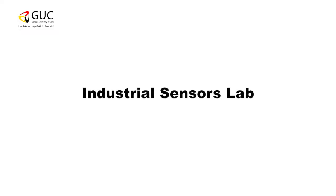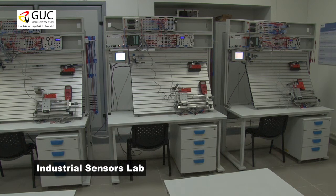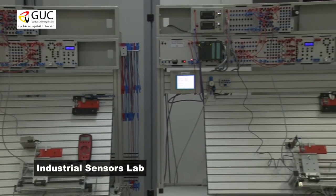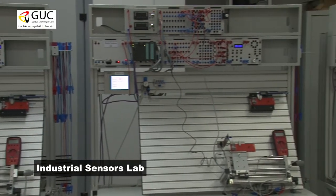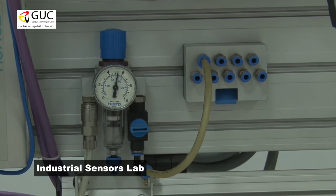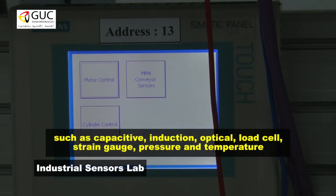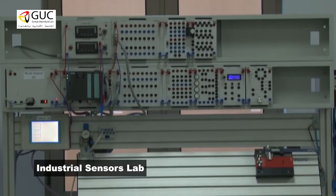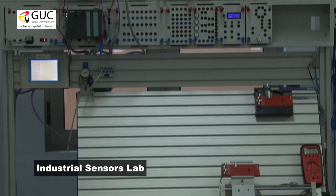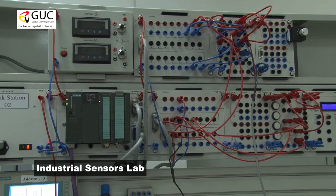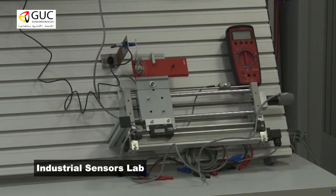Industrial Sensors Lab. Industrial sensors are a key part of factory automation and Industry 4.0. The lab covers a wide range of sensors, with different sensor types and classifications available, including output signal type and power classification.